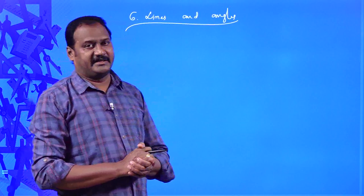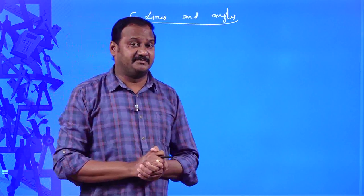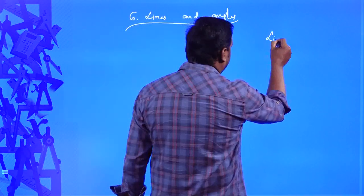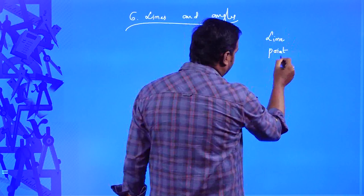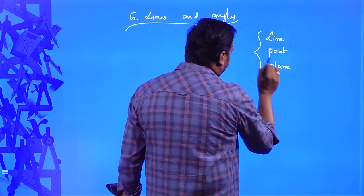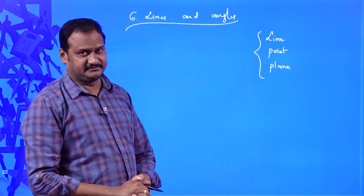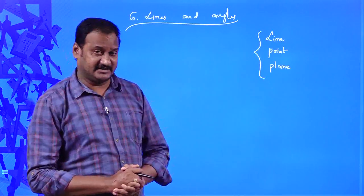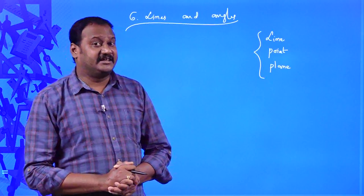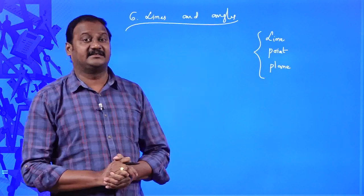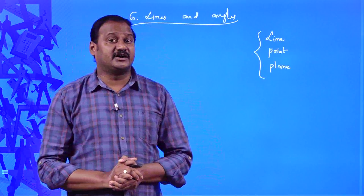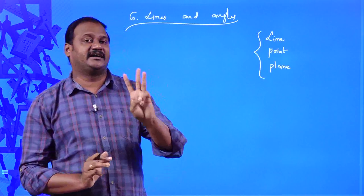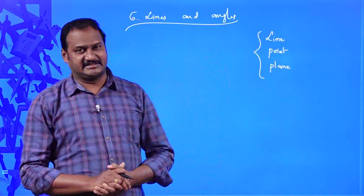First of all, what do you mean by three different basic words in geometry? They are: line, point, and plane. In the fifth chapter, Introduction to Euclid Geometry, we came across these three words — line, point, and plane — and it was clearly mentioned that these are three basic geometrical words which do not have any specific definition.